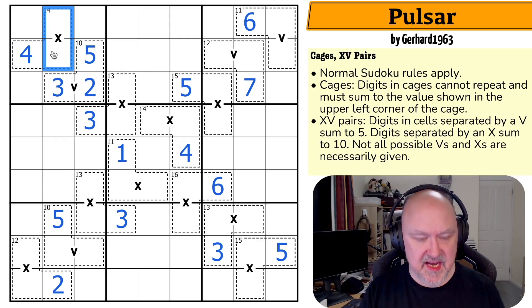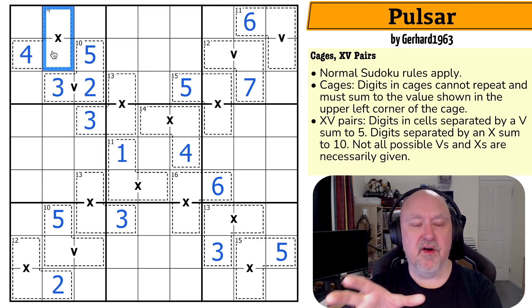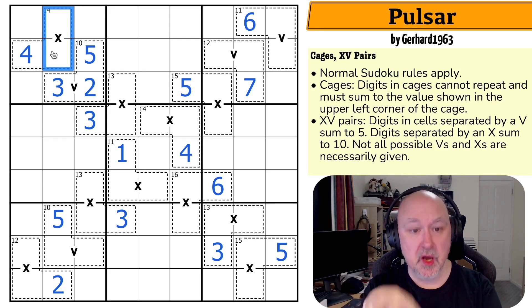So how do you sum to 10? Well, unlike five, which has to be made up only of digits lower than five, 10 has more options. You can never put a five on an X. That's an important thing to note.